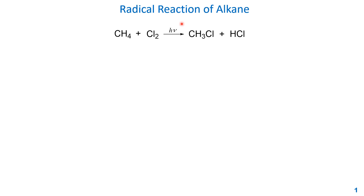The symbol hν represents the condition of light, although you can also use high temperature for this radical reaction. In this lecture I will use light as the condition. The product is chloromethane and the byproduct is hydrogen chloride. This is the chlorination of an alkane. The mechanism of radical reaction is different from other organic reactions.